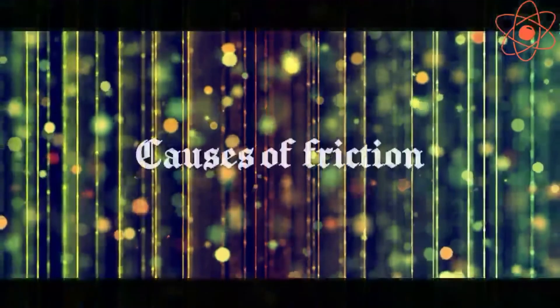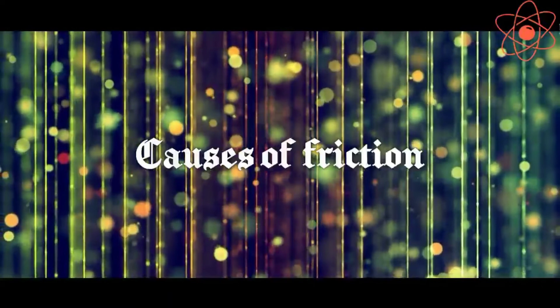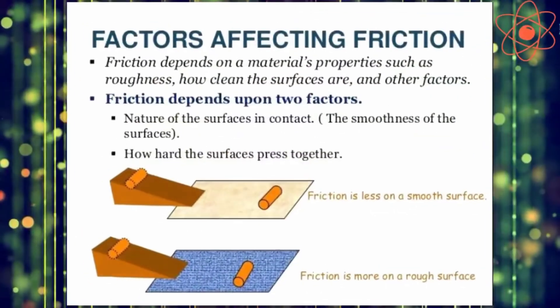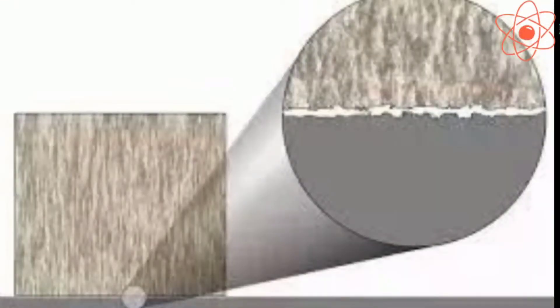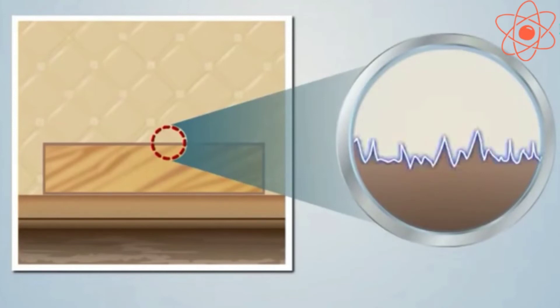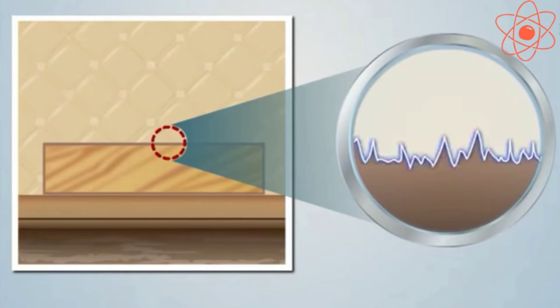Now let us understand the causes of friction. Friction depends on the surface of contact of bodies. Every object has a rough surface, though the surface may appear to be smooth to the naked eye. When we see through a microscope, it is found that the surfaces of all objects have irregularities.